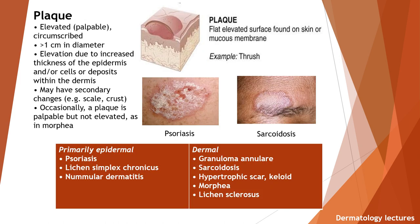Plaque. It is an elevated, palpable, circumscribed lesion greater than one centimeter in diameter; elevation is due to increased thickness of epidermis or cells or deposits within the dermis. May have secondary changes, for example scales or crust. Occasionally a plaque is palpable but not elevated, as in morphea. Plaque can be epidermal or dermal. Examples of epidermal plaque are psoriasis, lichen simplex chronicus, and lamellar dermatitis. Examples of dermal plaques are granuloma annulare, sarcoidosis, hypertrophic scar, morphea, and lichen sclerosus. Here you can see the pictures of psoriasis and sarcoidosis.